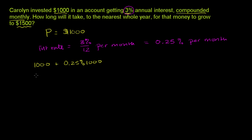If you factor the 1,000 out, she's going to have 1,000 times 1 plus 0.25%. This is after one month. After two months, you would then grow this amount by 1 plus 0.25%, so you would multiply that times 1 plus 0.25%.